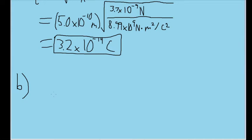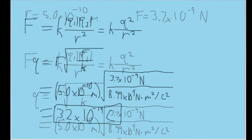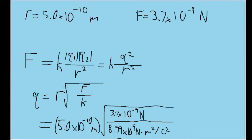The problem doesn't tell us this outright, but the fact that the question implies electrons are missing means that the charge on these ions at the moment must be positive, since electrons are negatively charged.